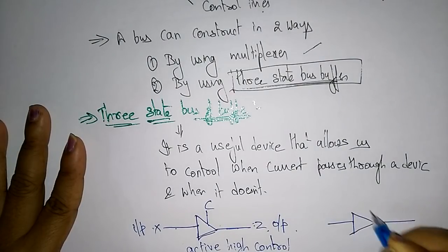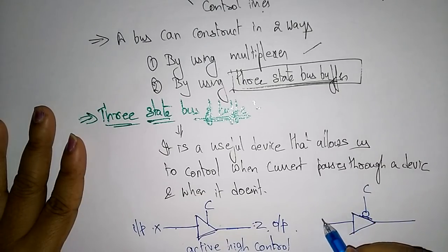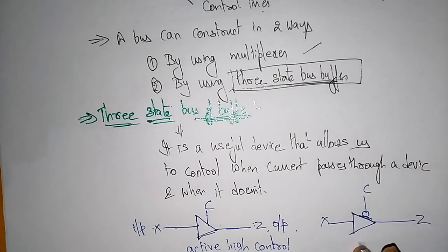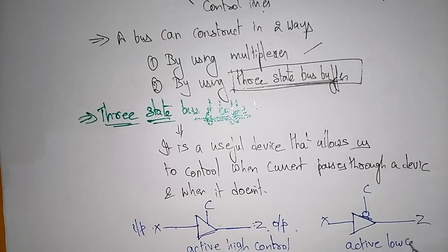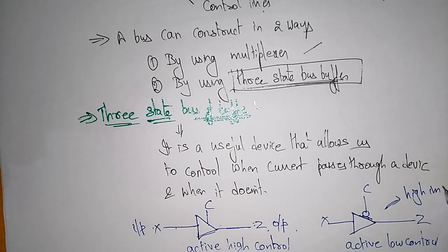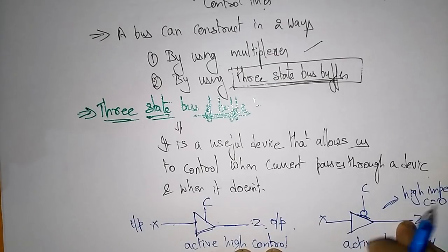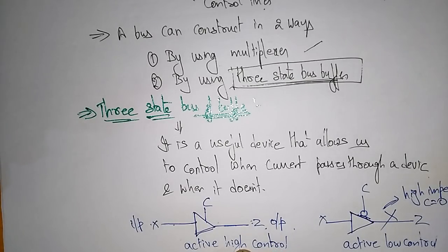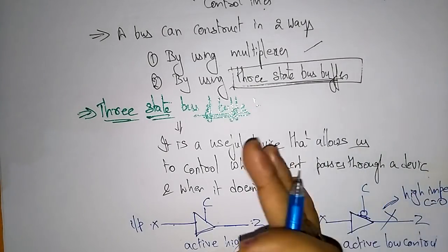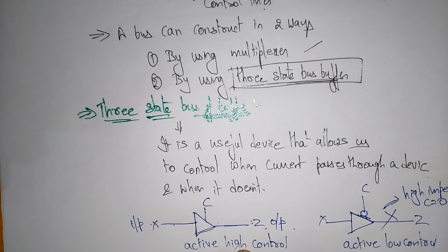Whereas if the diode is configured the other way, you call it a three-state buffer with active low control. Active low control means the circuit goes to high impedance. Whenever C is zero and the circuit is at high impedance, it supplies low power, and whatever input you are giving will not reach the output.